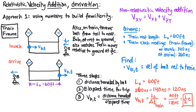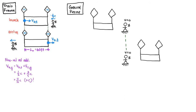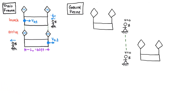We're now going to take the same problem and analyze it in Bob's frame, the ground frame. Let's see why the non-relativistic velocity addition formula simply can't be right. The non-relativistic equation is VBG equals VBT plus VTG. We just found VBT is one-half c, and the train speed relative to the ground is three-fifths c. Adding those together gives a number bigger than the speed of light — and we know that's not possible. So we get rid of the non-relativistic formula and need something better.